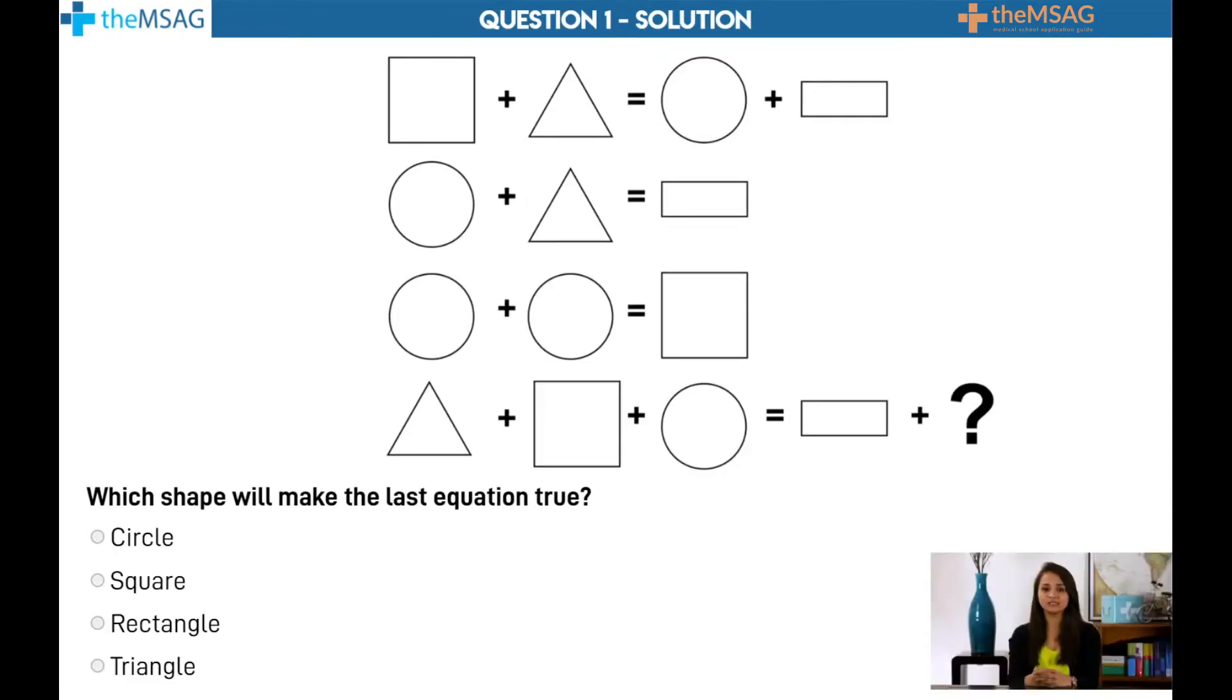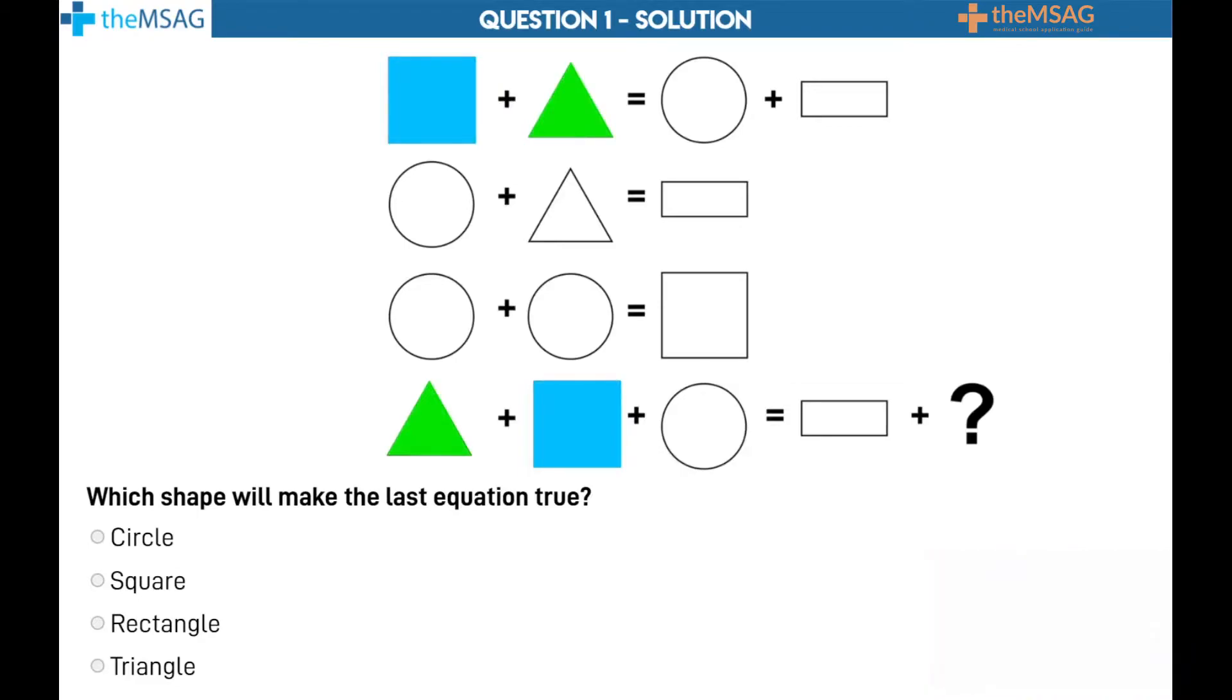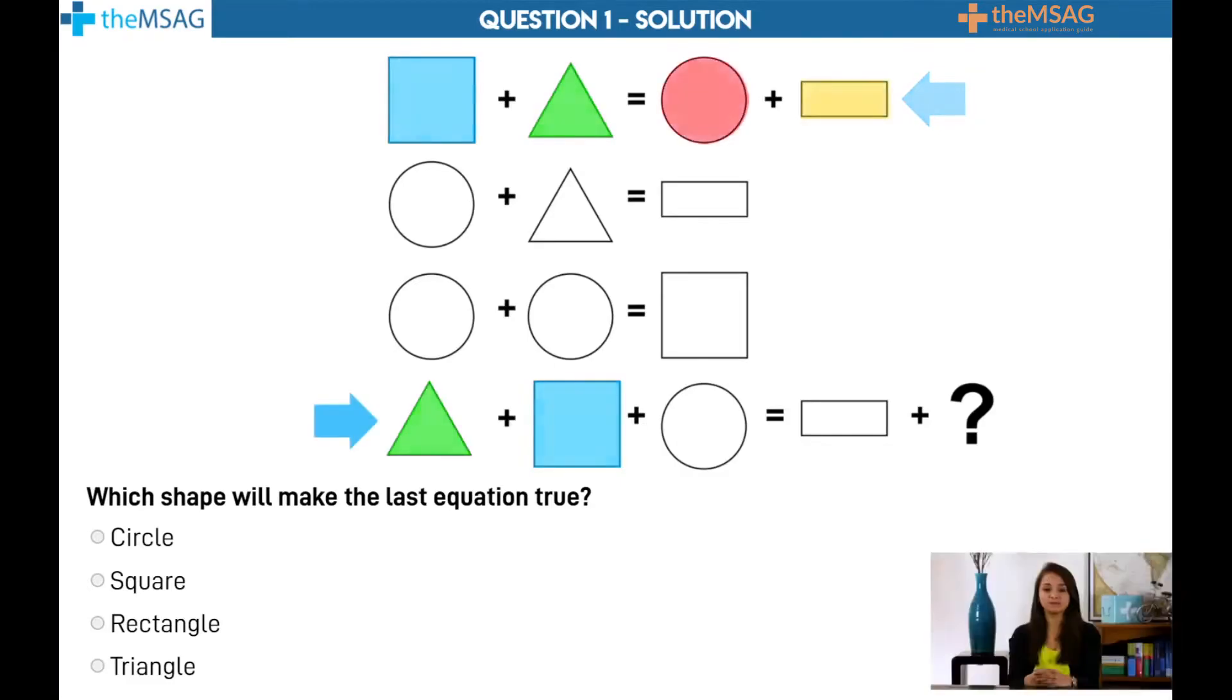Firstly, did you notice that the first three elements of our final equation were featured in the very first equation? We are told that the square and the triangle equal the circle and the rectangle. And we have the square and triangle in our final equation. Just substitute the circle and rectangle into the final equation.